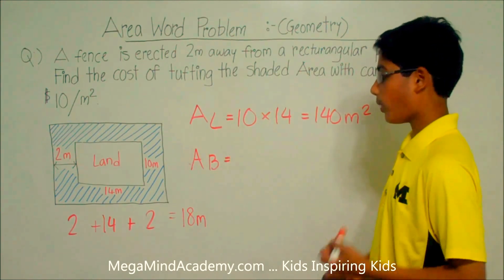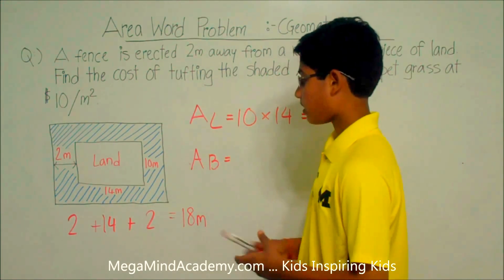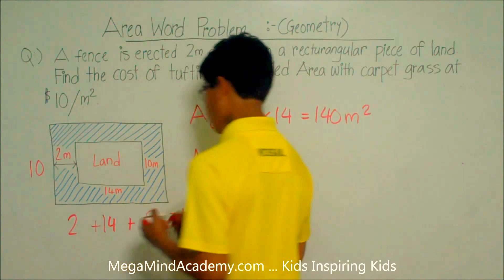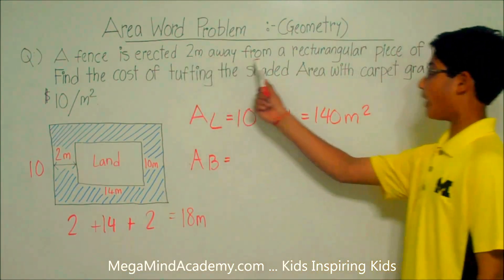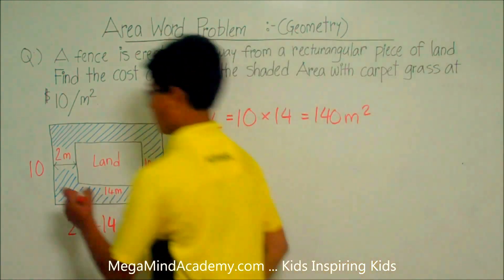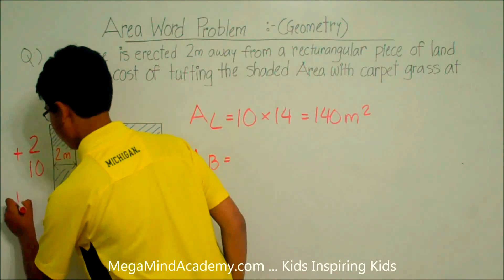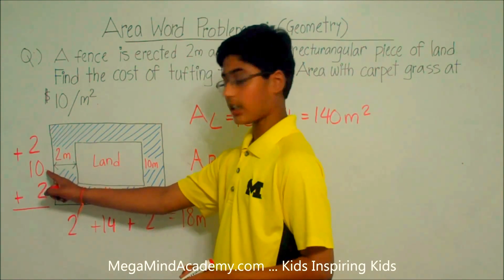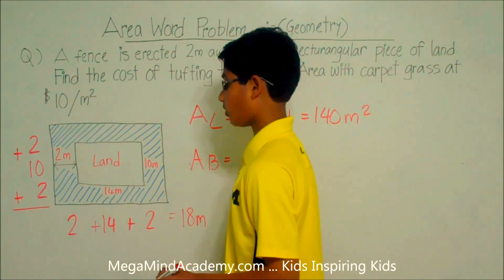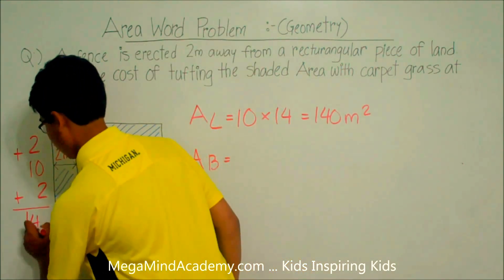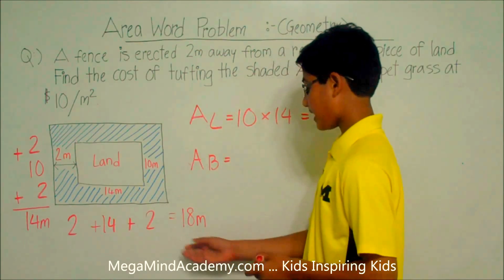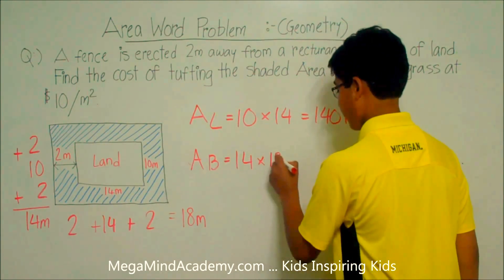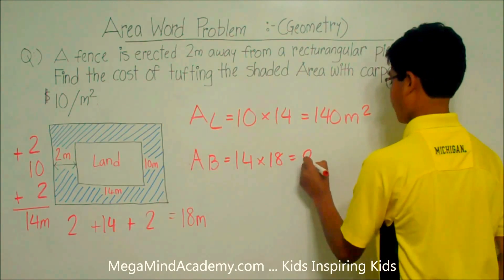Now let's find the width. The width of the piece of land is 10 meters. The fence is erected 2 meters away, so plus 2 meters on the top and plus 2 meters on the bottom. So 2 plus 10 plus 2 equals 14 meters. Therefore, 14 meters times 18 meters is equal to 252 meters squared.